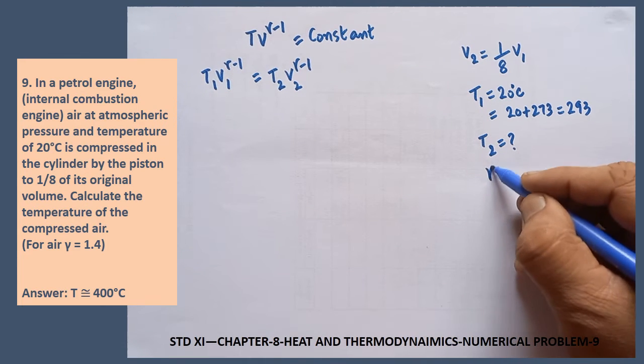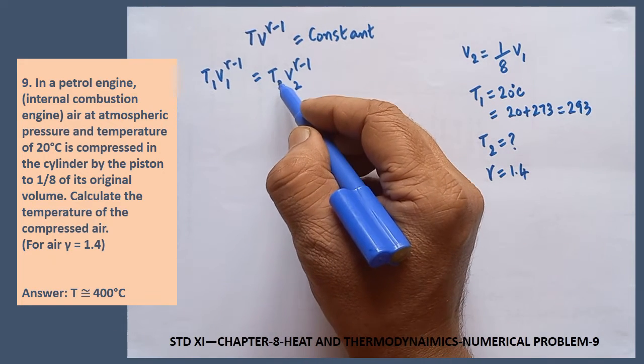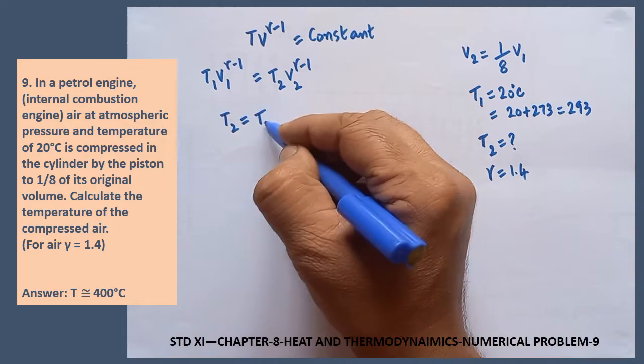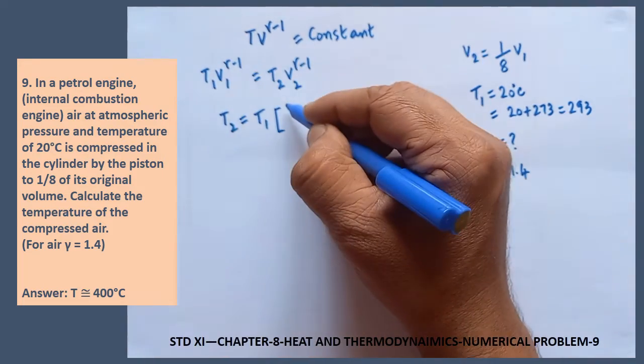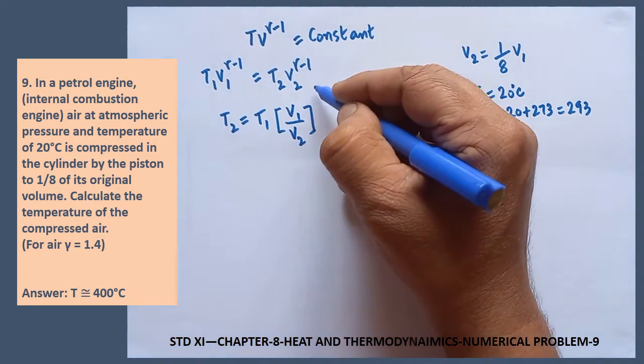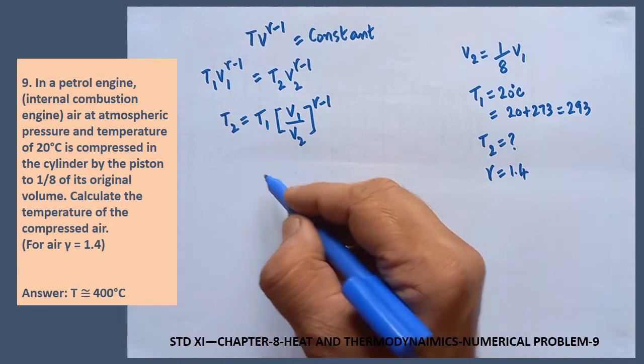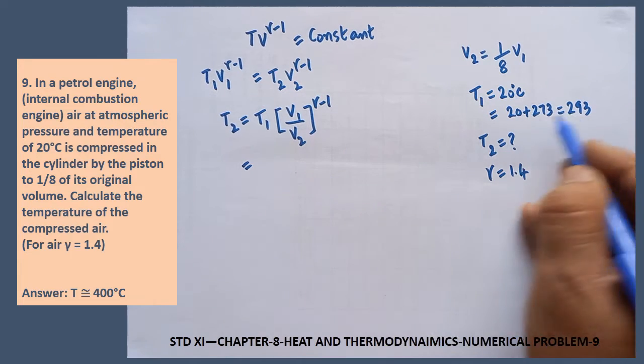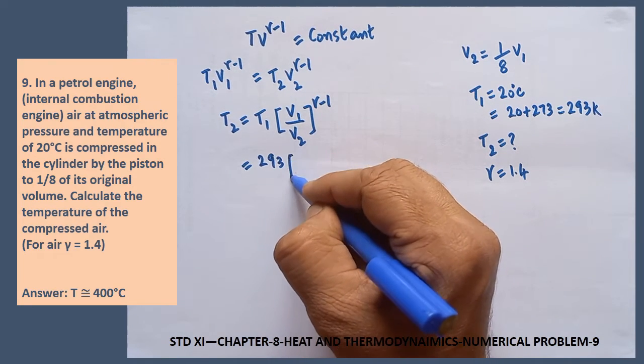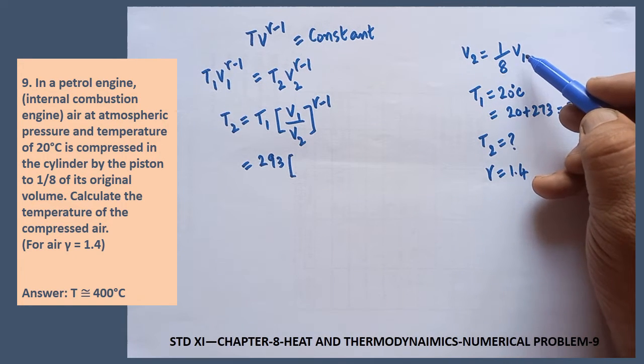Here, gamma value is given. Gamma of air is 1.4. Now, you substitute, you can easily find out. What is required? T2 is required. So T2 is equal to T1 in bracket, V1 divided by V2, and you can write the gamma minus 1 as the power of both the two. Now, T1 is known already, 293 Kelvin in bracket. Look at here, V2 is equal to 1 8th of the V1.